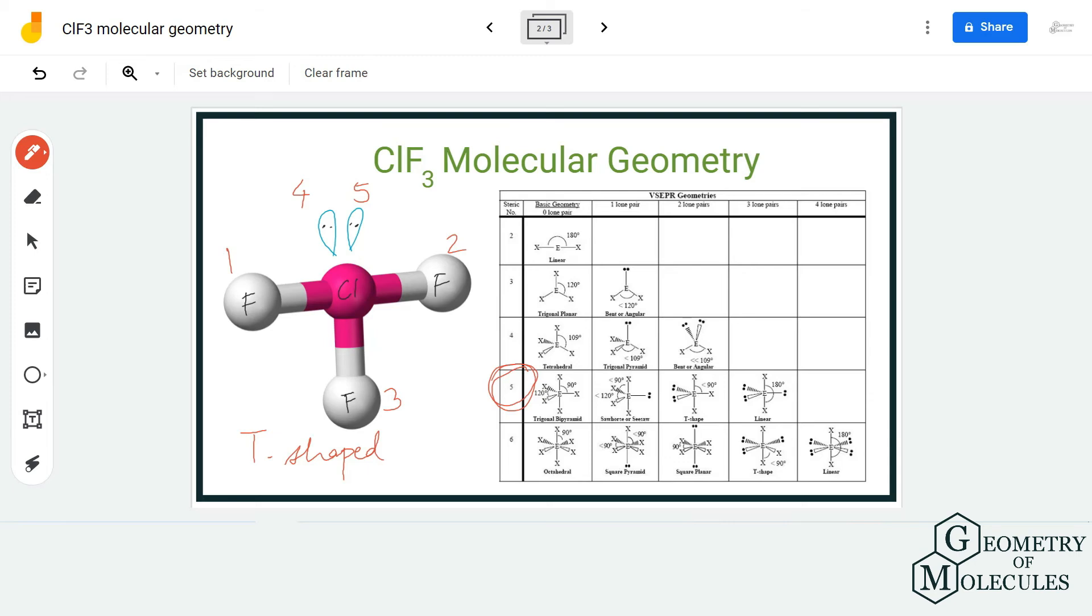So if you refer to this table, the molecules that have steric number five and have two lone pairs—because there are two lone pairs on this chlorine atom—have T-shaped molecular geometry. Hence the molecular geometry for ClF3 is T-shaped.